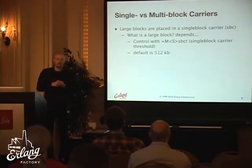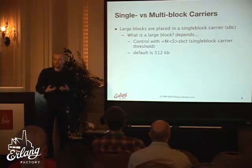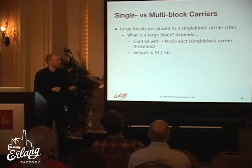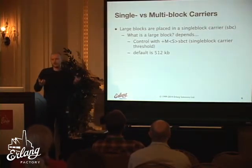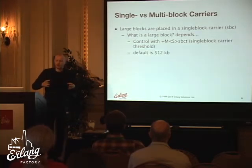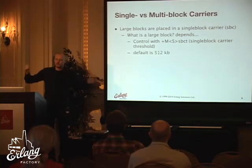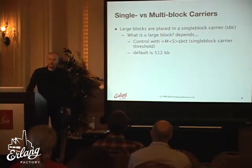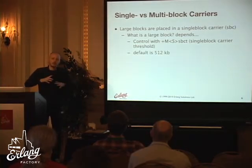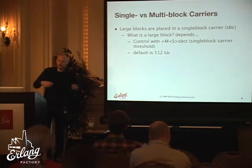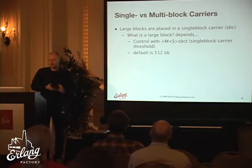There are two different concepts: single-block carriers, which contain exactly one block, and multi-block carriers. Normally, large blocks go into single-block carriers while small blocks share a multi-block carrier. This is because the OS handles large contiguous chunks well, and single-block carriers are typically allocated via malloc. The definition of 'large' depends on context — sometimes 256 bytes, sometimes 5 megabytes. The default threshold is half a megabyte: blocks smaller than 512 KB go into multi-block carriers, larger ones into single-block carriers.